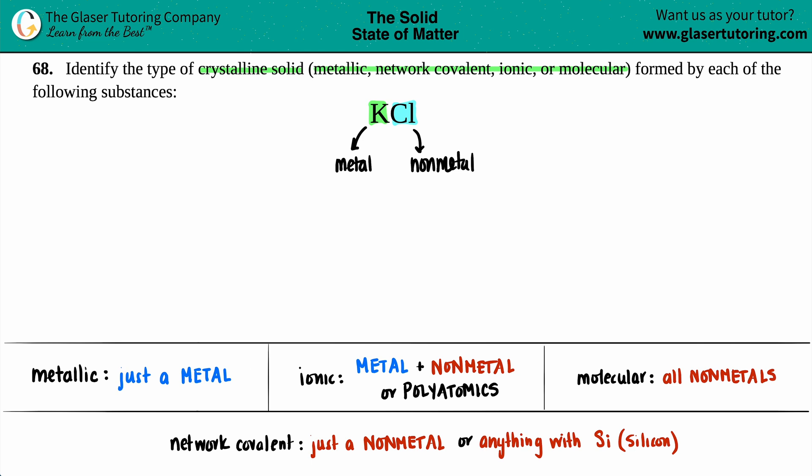So can't be metallic. Next one is ionic. Ionic, just like we learned all the way back at the beginning of chem, ionic crystalline solids are coming from ionic compounds. It has to have a metal and a non-metal, or if you see your polyatomics. But here we go: I got a metal potassium, I got a non-metal, so we're basically good. This would be an ionic crystalline solid.